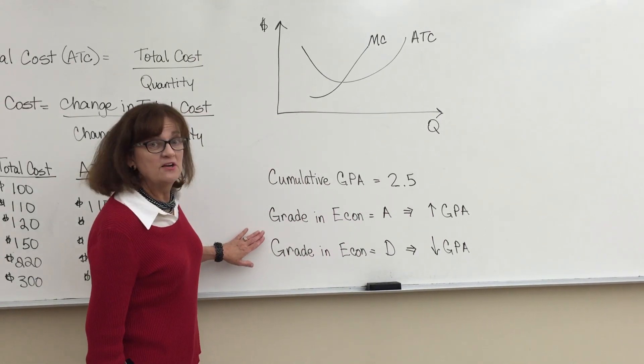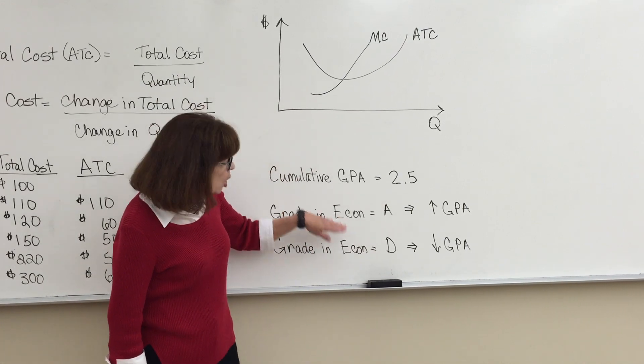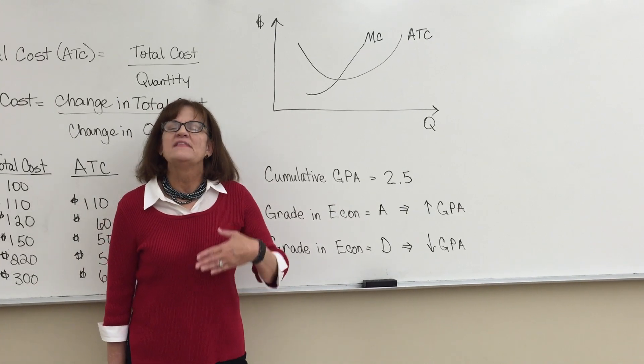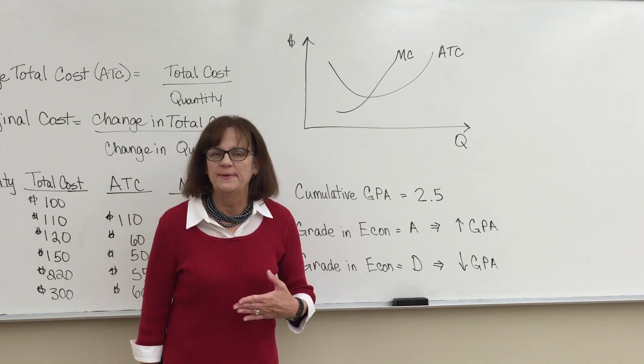If you made that unfortunate D in econ, that would lower your average. So the marginal moves the average. It's true for your GPA and it's true for the cost in a company.